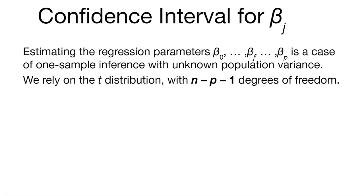This is a case of one sample inference with an unknown population variance. And so we can use the t distribution, just like we did in simple linear regression, but instead we'll be using n minus p minus 1 degrees of freedom.